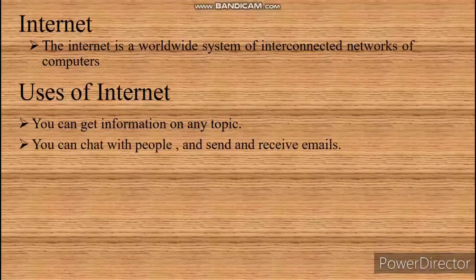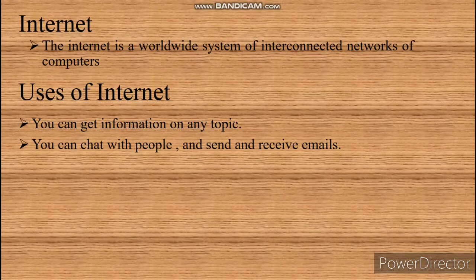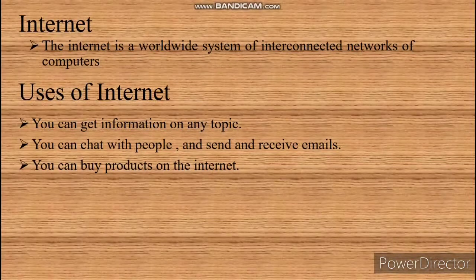You can chat with people and send and receive emails. With the help of the computer, you can communicate with people and send and receive emails to any part of the world at any time. Emails, video conferencing, chat, and social network sites are features of the internet that let people communicate around the world. You can also buy products on the internet — companies use the internet to advertise and sell their products. Purchasing products on the internet is known as e-commerce.